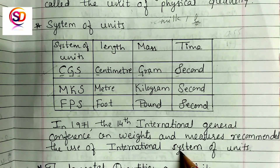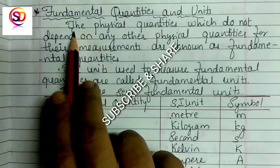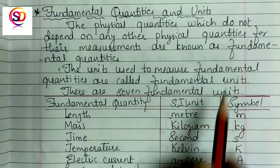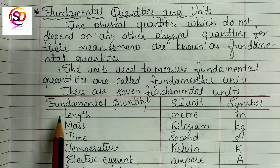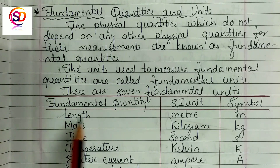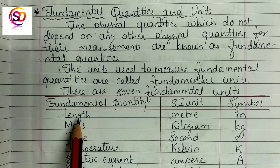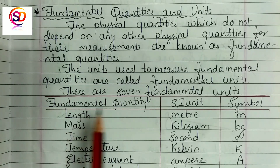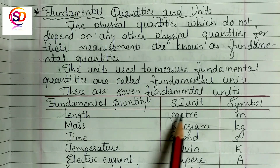They adopted the International System, that is the SI system. The physical quantities which do not depend on any other physical quantities for their measurement are known as fundamental quantities. For example, length is a fundamental quantity — it can be measured independently, not depending on any other quantity. The unit used to measure a fundamental quantity, like meter for length, is called a fundamental unit.